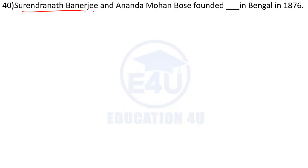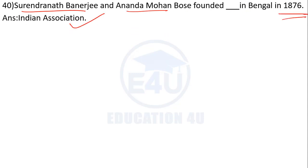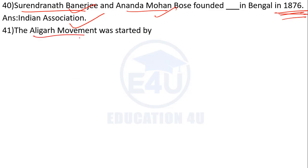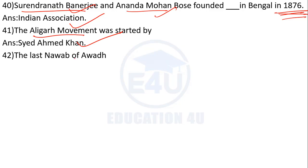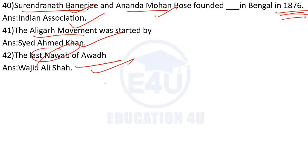Surendranath Banerjee and Ananda Mohan Bose founded the Indian Association in Bengal in 1876. The Aligarh Movement was started by Syed Ahmed Khan. The last Nawab of Awadh was Wajid Ali Shah.